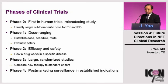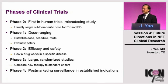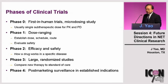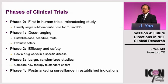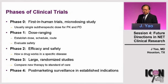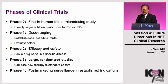There are various types of clinical trials, from phase 0 through phase 4. Phase 0 are small microdosing studies to understand pharmacokinetics and pharmacodynamics. Phase 1 are dose-ranging studies to establish the correct dose, schedule, and route of administration — usually not specific to a particular cancer. Phase 2 are efficacy and safety studies looking at how a drug works in a particular disease. Phase 3 are pivotal studies usually comparing a new treatment to standard of care.